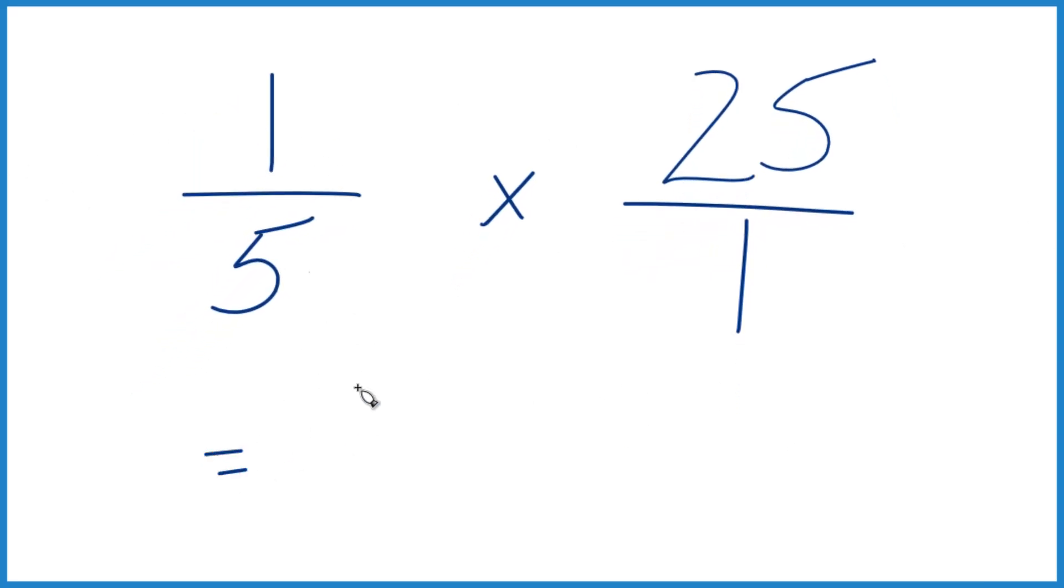1 times 25, that equals 25. 5 times 1 is 5. And if you divide 25 by 5, 5 goes into 25 five times because 5 times 5 is 25.